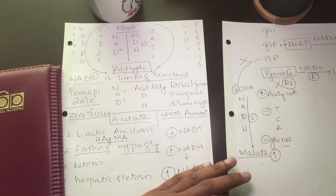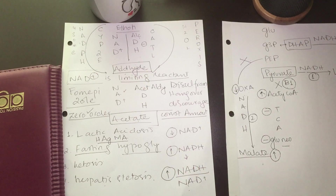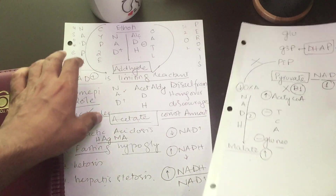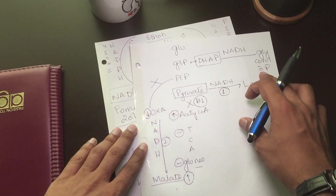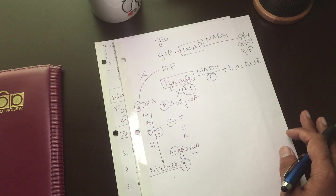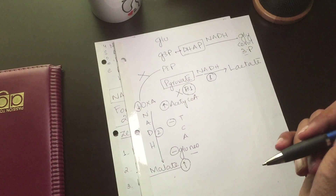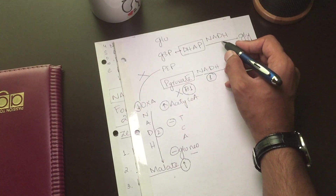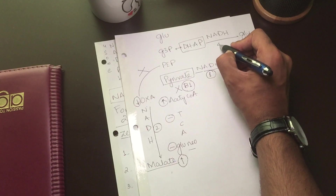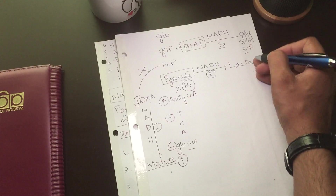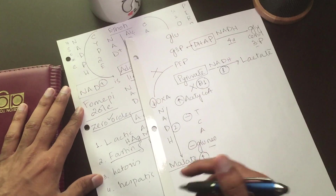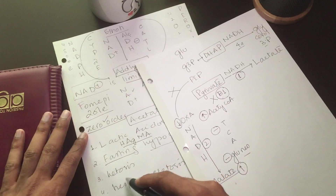Glycerol-3-phosphate is a very important substrate for the formation of fatty acids. This is the basis of the fourth effect — fatty acid synthesis leading to hepatic steatosis.